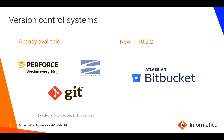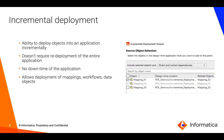Atlassian Bitbucket is a new version control system supported in 10.2.2, in addition to Perforce, Subversion, and Git already available. BDM uses the concept of applications to deploy or migrate code from one Informatica environment to another — an application is a container in which you group executable objects such as mappings, workflows, and migrate them. The incremental deployment functionality in 10.2.2 lets you add or modify objects inside an application without overall downtime, which is extremely helpful for mixed workloads such as streaming and batch mappings.